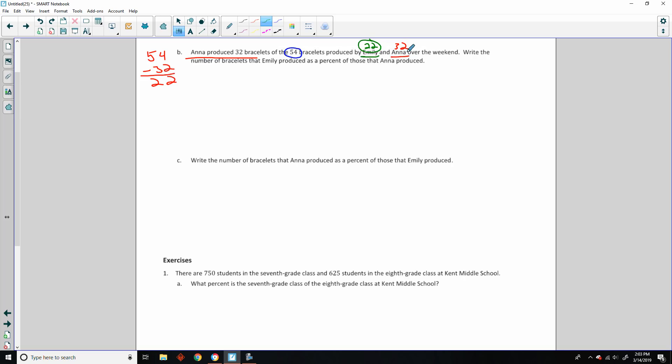Write the number of bracelets that Emily produced as a percent of those that Anna produced. So Anna produced 32. What percent of 22 is 32? So we would say 22 divided by 32 equals some number over 100. I can reduce this to 11 over 16, but that doesn't really help us. I always try to find ways to find a multiple of this that will go evenly in. But when that doesn't happen, then what we can always do is cross-multiply. So 32x equals 22 times 100, or 2200, and divide both sides by 32.